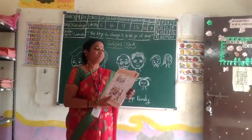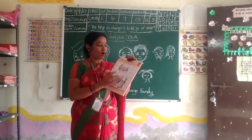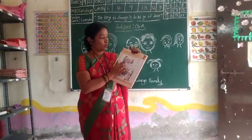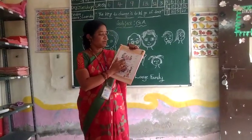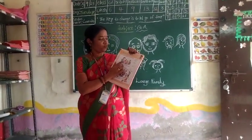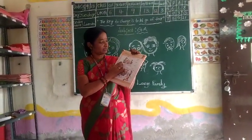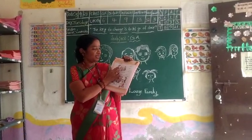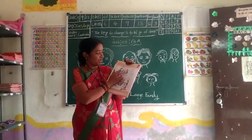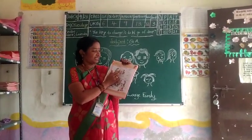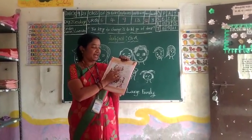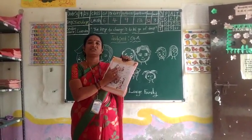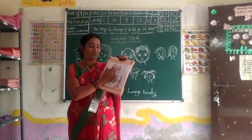Sam's family — small family. How many members are here? There are four members: Father, mother, sister, and Sam. This is called a small family.